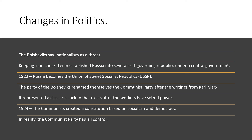The Bolsheviks, the party of Lenin, also renamed themselves the Communist Party, drawing on the writings of Karl Marx. That's where we get the phrase 'Communist.' The Soviet Union and the Communists represented a classless society existing after workers seized power — not the wealthy nobles controlling the country, but the workers. In 1924, the Communists created a constitution based on socialism and democracy, but in reality the Communist Party had all the control, and there was very little democracy.